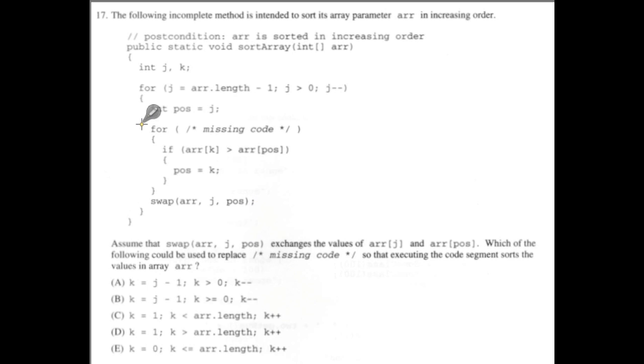This swap is at the end of this for-loop, so it only happens once every time the outer loop is executed. And the N squared sort that we've covered that does that is a selection sort.